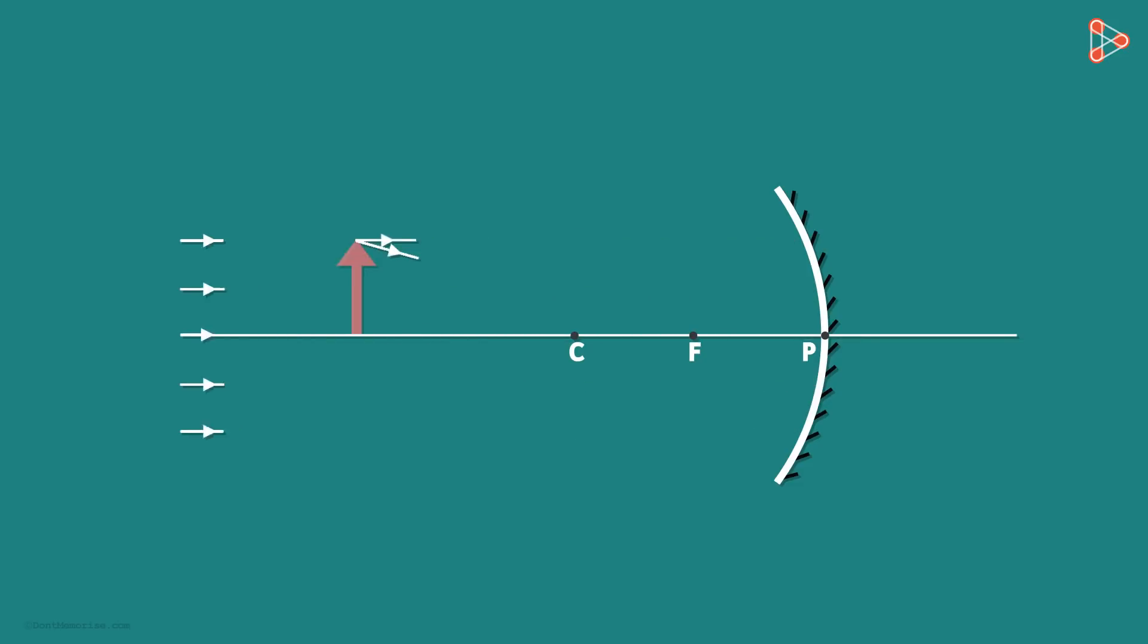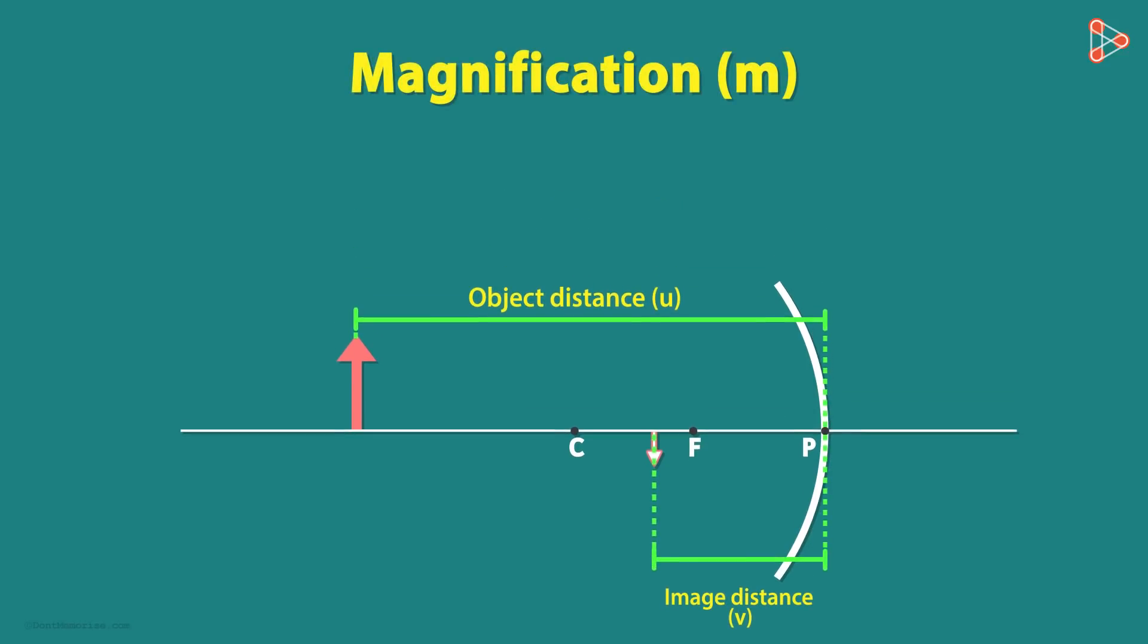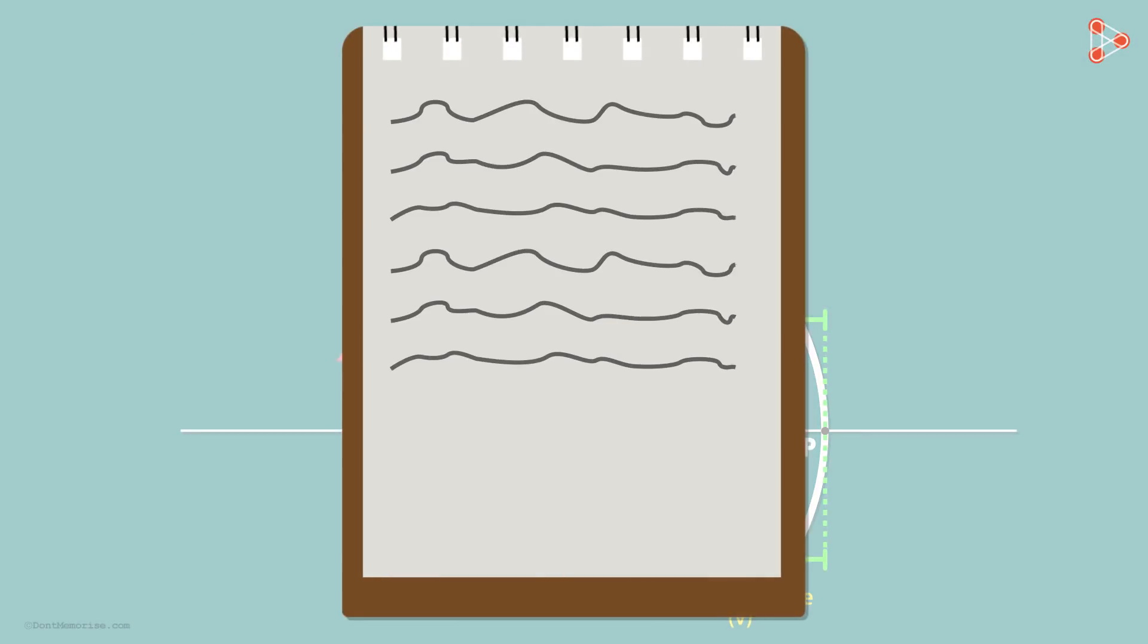Now there is a relation between the magnification and the object distance u and the image distance v. The relation is that HI over HO is equal to negative V over U. This relation is very easy to prove. I will give you a rough sketch of its proof in another video in this playlist.